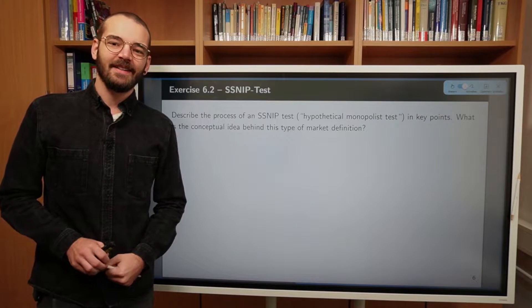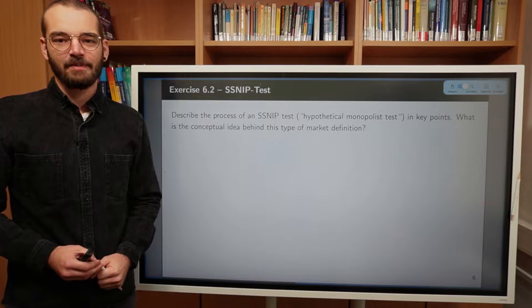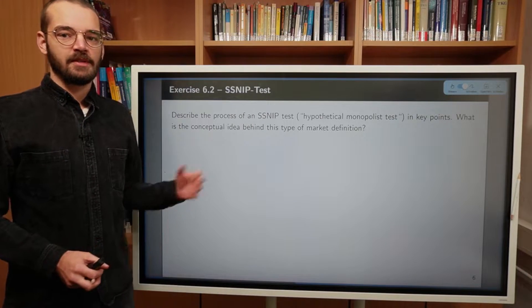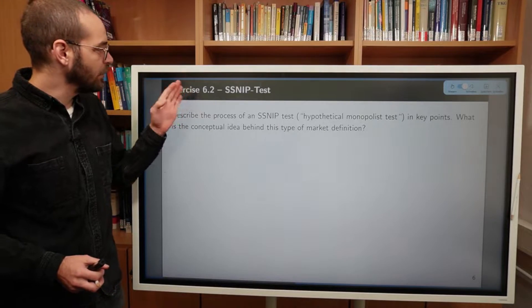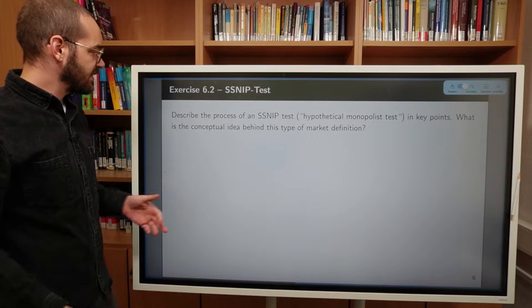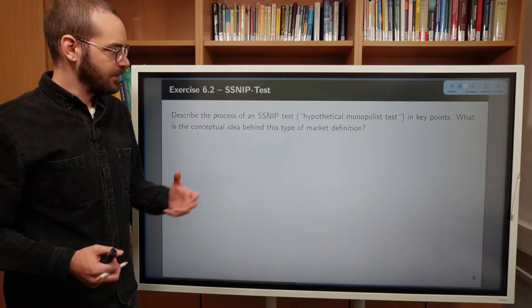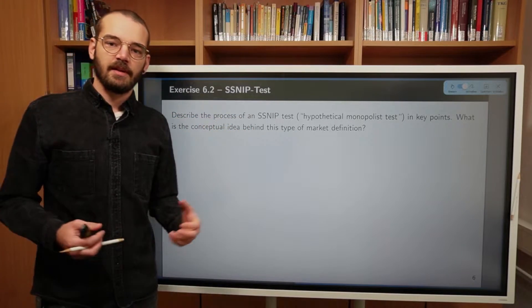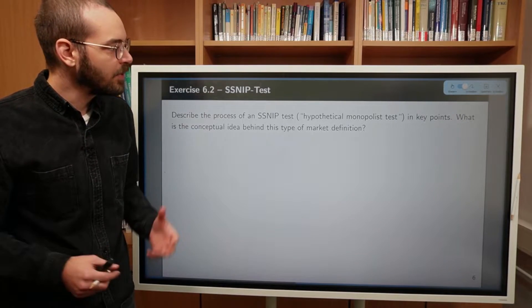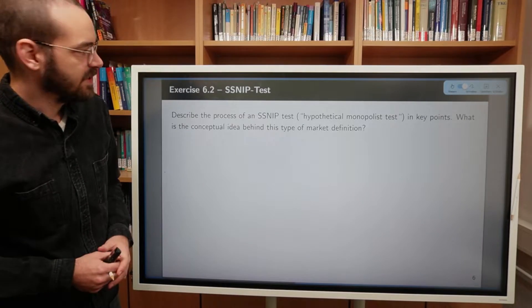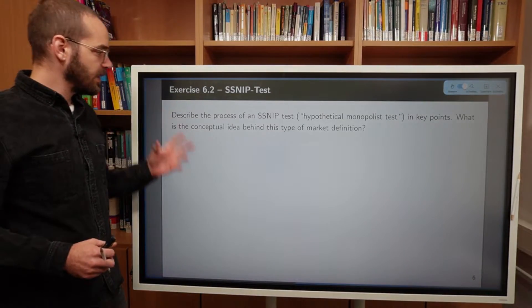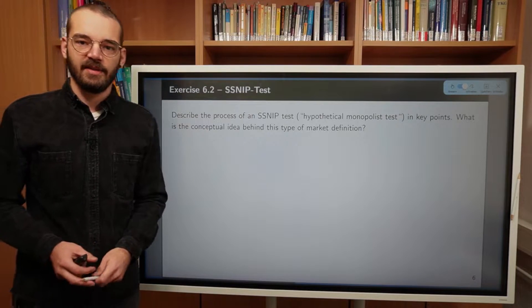Welcome to this video in our course Competition Policy and Strategy. In this video we are going to talk about the solutions to exercise 6.2, the so-called SSNIP test. In this exercise we are asked to describe the process of the SSNIP test, or how it's commonly referred to the hypothetical monopolist test, in key points. And then we are asked to answer the question, what is the conceptual idea behind this type of market definition?